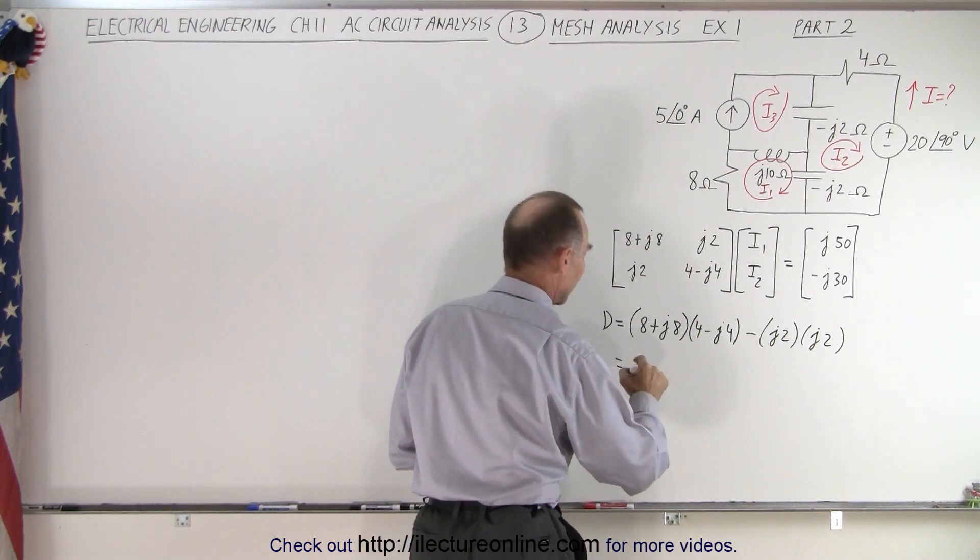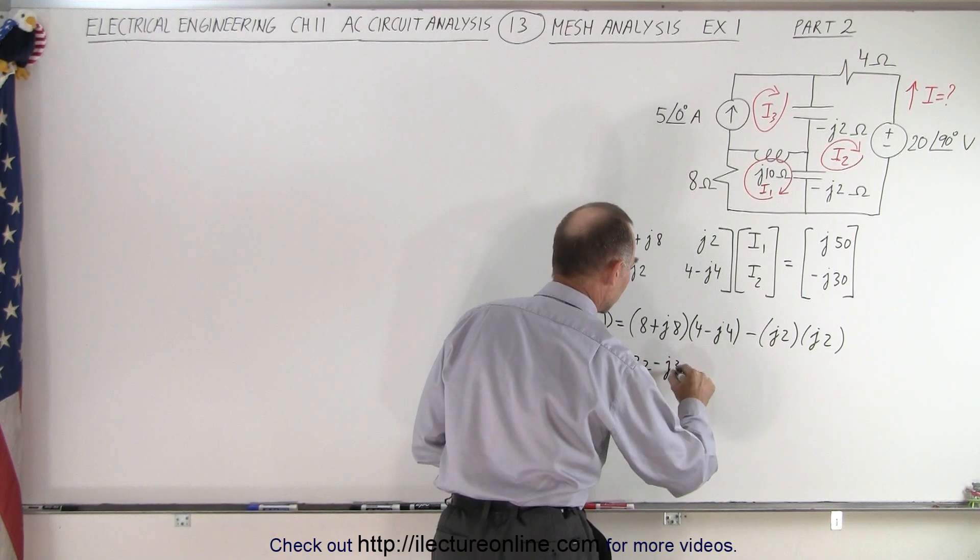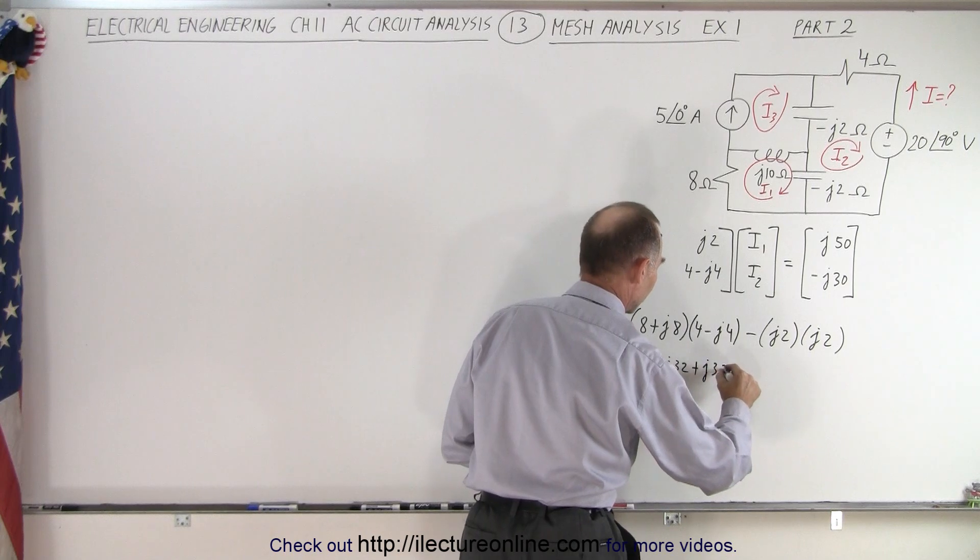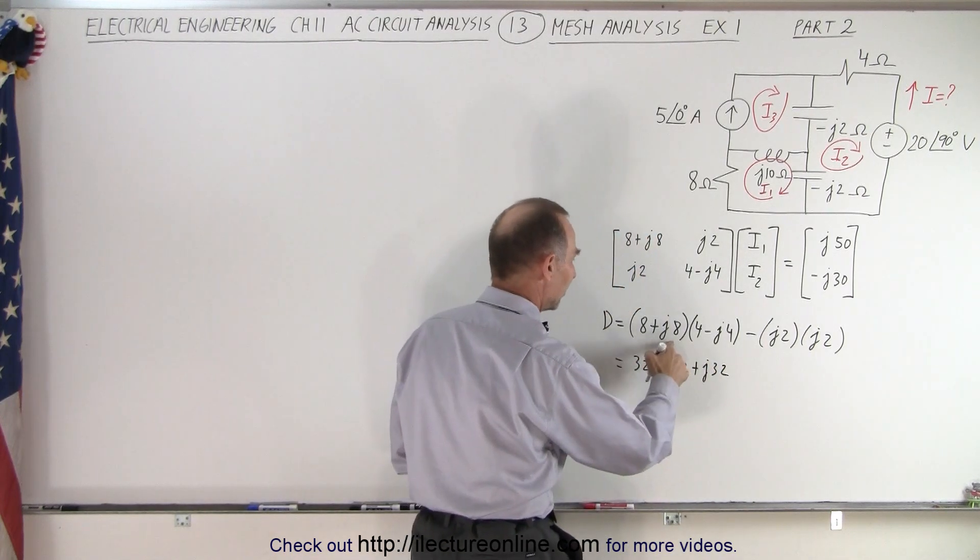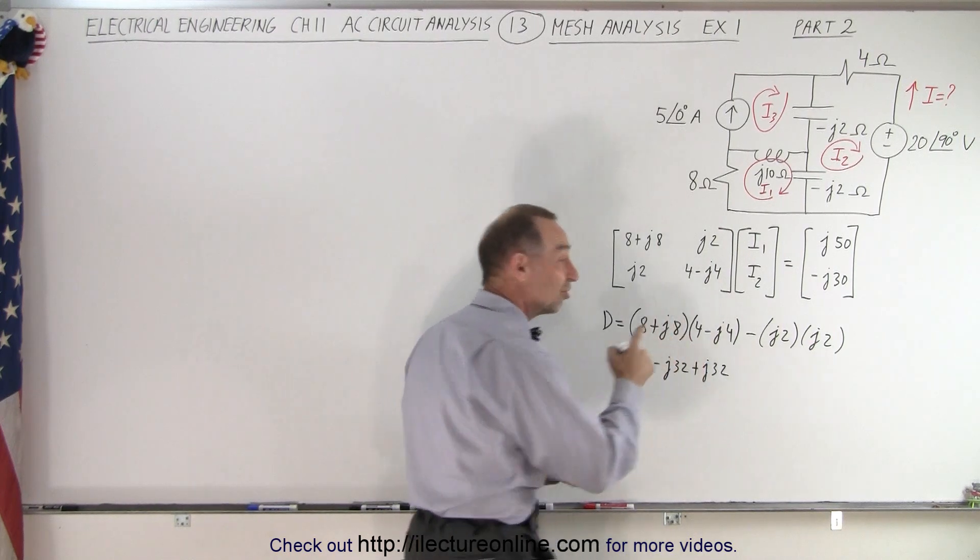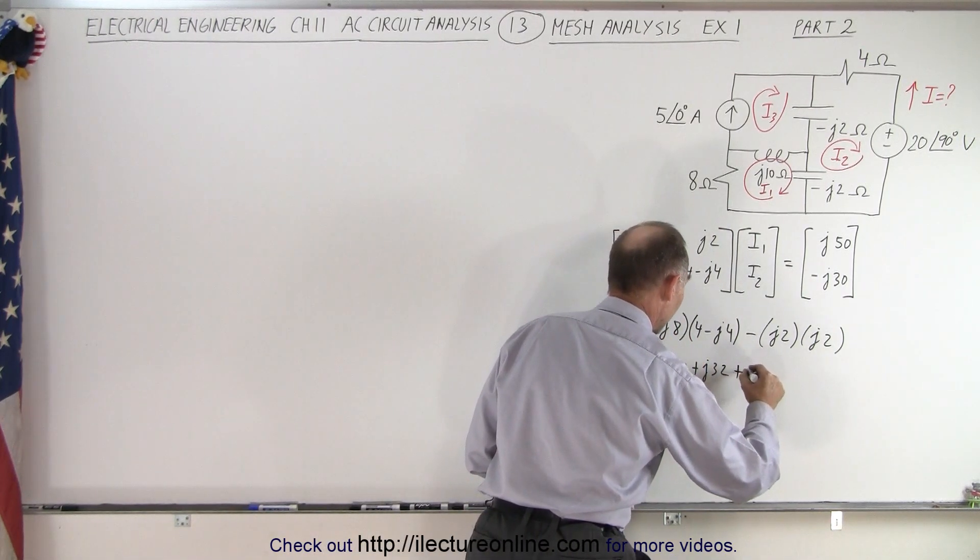So let's go ahead and do that. We have 8 times 4, that's 32. 8 times this is minus j32. This times this is plus j32, so the j32s cancel out. And this times this is a minus j squared times 32, but the j squared is a negative 1, minus times the minus is plus, so it's going to be plus 32.